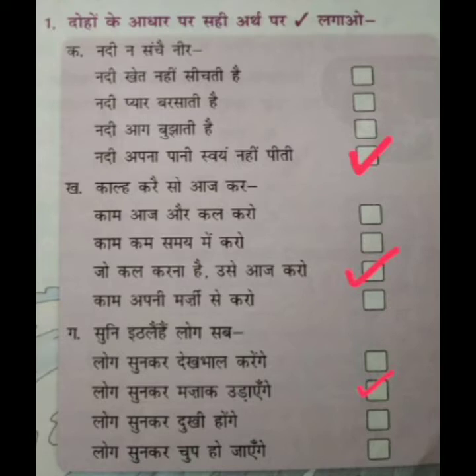Suni ith la hai loog sab — sunkar sab log ithraate hai, means mazak udate hai. The correct option is: Log sunkar mazak udaenge. The second option is correct — put a tick against the second option.